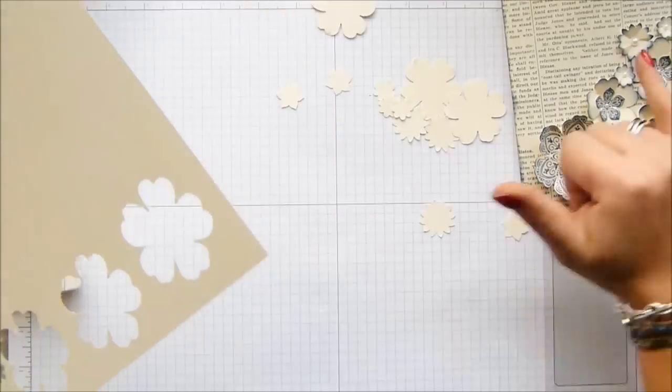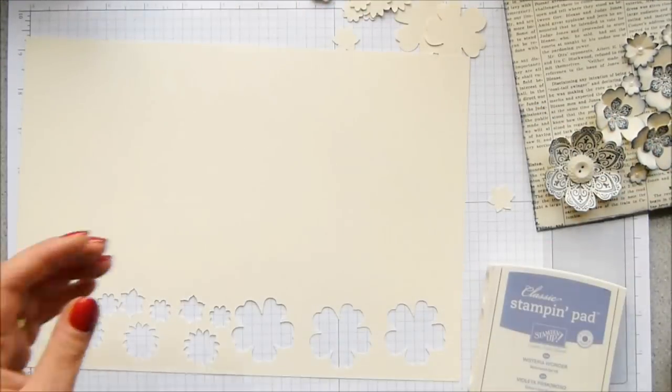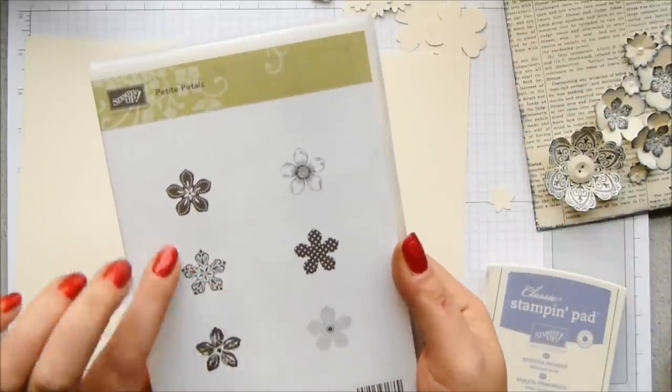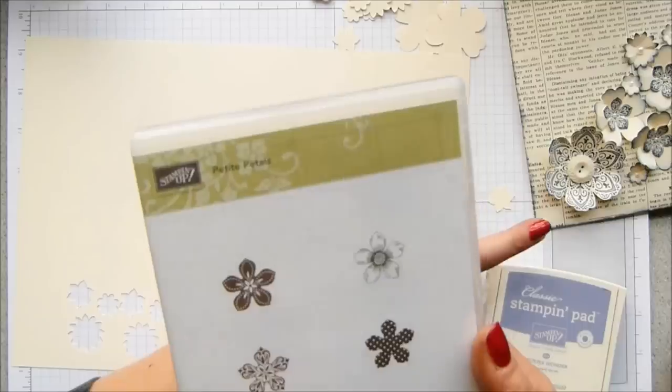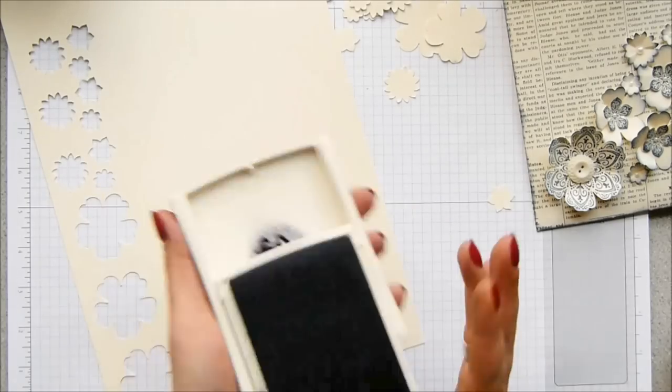And then I'm going to do a little bit of stamping just to get these ones in the middle and I'm using Petite Petals. Love it. Gorgeous set. I'm going to stick with the same sort of ornate pattern that I chose for my original one. I'm going to stick with it. It looked pretty.